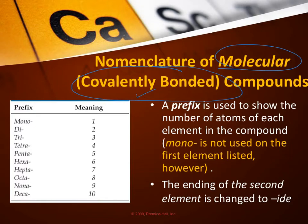The big difference with molecular compounds is the elements are non-metals. Remember, covalent compounds are made from non-metals. They can combine in different ratios. For example, you can have one carbon and one oxygen, or one carbon and two oxygens.